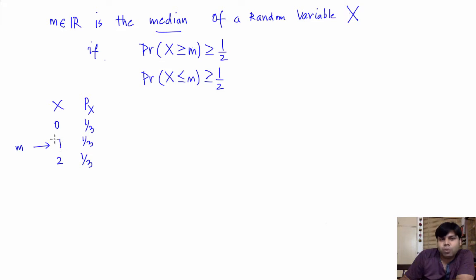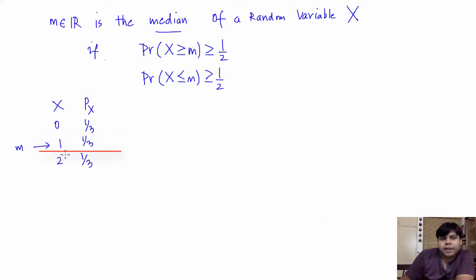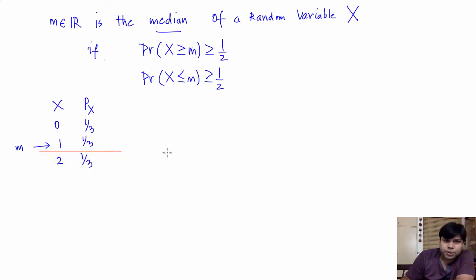Any number below 1 cannot be the median because the probability that x is less than or equal to that number will be at most one-third, and any number higher than 1 cannot be the median because the probability that x is greater than or equal to that number is going to be less than or equal to one-third. So, 1 is a unique median in this case.